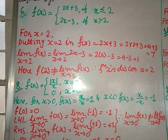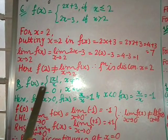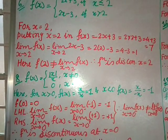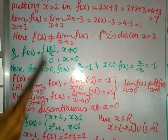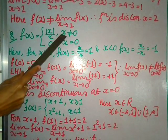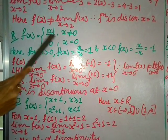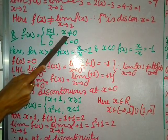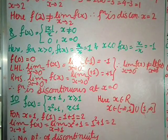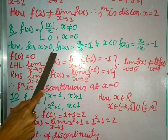Question 8: f(x) = |x|/x when x ≠ 0, and f(x) = 0 if x = 0. Since x ≠ 0 is given, I will split into x < 0 and x > 0.